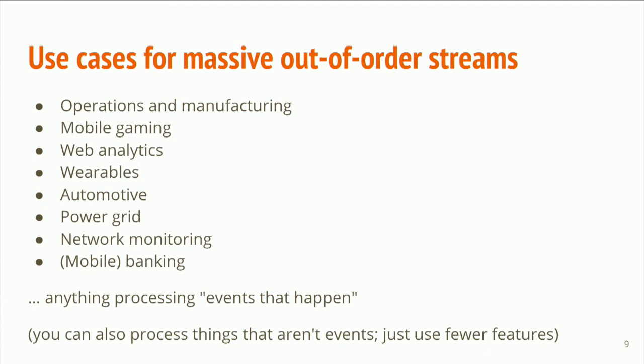And the other thing that's important is that they're going to come out of order because some of these devices are going to have wonky connectivity at different times, and you just need to still get the right answer despite the fact that out of order delayed data is just, that's the facts. That's the facts of life. So some examples of applications out there that produce data like this, mobile gaming, as I mentioned, web analytics, wearables. I won't read the whole list. But basically anything that's processing events that happen, right? If every piece of data has a timestamp that's when it happened, you can bet that Beam is going to help you. And you can process things that aren't events. You're just going to use fewer features of the programming model.